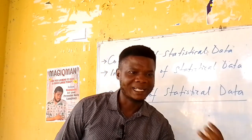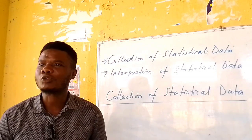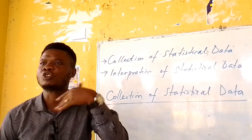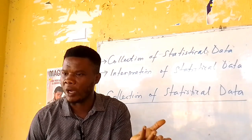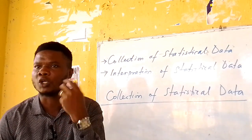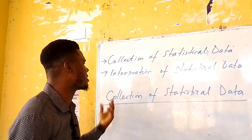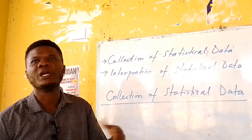Number one: the collection of statistical data. Number two: the organization and description of statistical data. Number three: the analysis of statistical data. And number four: the interpretation of statistical data. What we want to do here is not to elaborately discuss all these items, but for students to know what we mean when we say you are to collect statistical data.